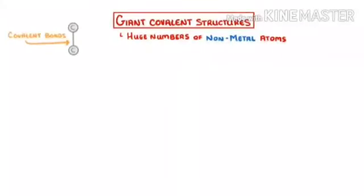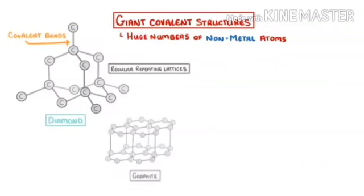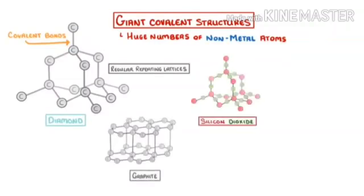There are a large number of covalent molecules formed by non-metals, just like diamond, graphite, and silicon dioxide. They have regular geometry but they don't conduct electricity.